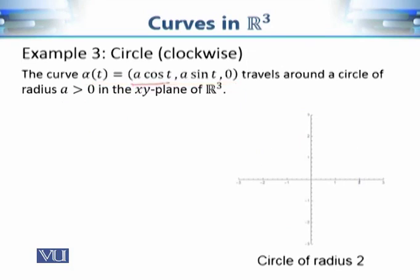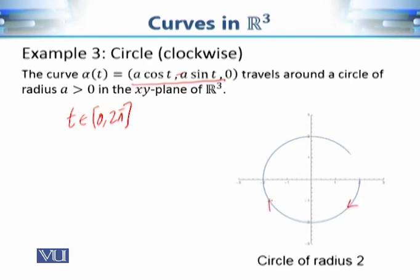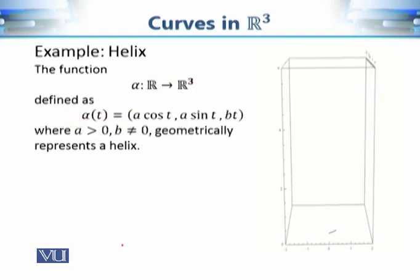Now let's consider another example. Here the function is given as alpha(t) = (a cos t, −a sin t, 0) — there is a minus sign — and we again take t from 0 to 2π. If we vary t and join the resulting points, we once again get a circle, but in this case the direction of motion is exactly opposite: it is clockwise. Both functions are different functions that represent the same geometric shape — a circle of radius a — but with opposite directions. So a function alpha gives us two things: the geometric shape and the direction of motion.